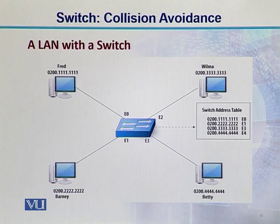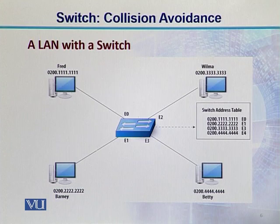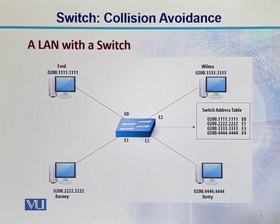If you look at the table, every Ethernet address is listed against a port. For example, 0200.1111.1111 is against E0. So if the switch receives a frame whose destination address is Barney, it will use this table and forward the frame only in Barney's direction — neither Wilma nor Betty will receive the frame.